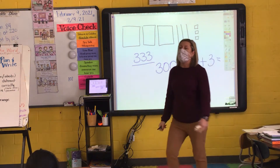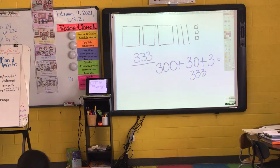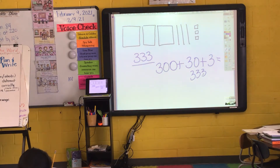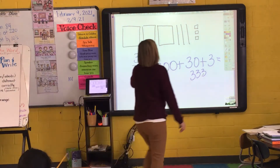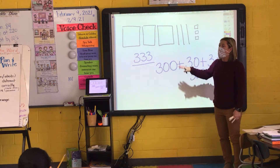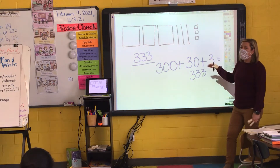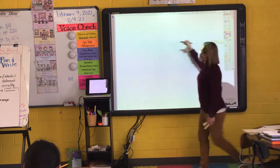Dylan, I need for you to be in your seat and your attention to be focused up here, not on what you drew. Abby, I need for your attention to be up at the front of the room. This is something new that you are learning, so your attention has to be focused up here. When I write my number in expanded form, I am writing an addition number sentence. So my expanded form number sentence is 300 plus 30 plus 3 equals 333.